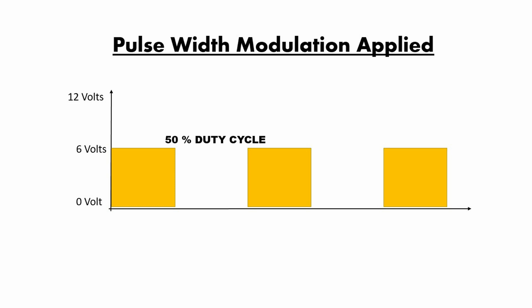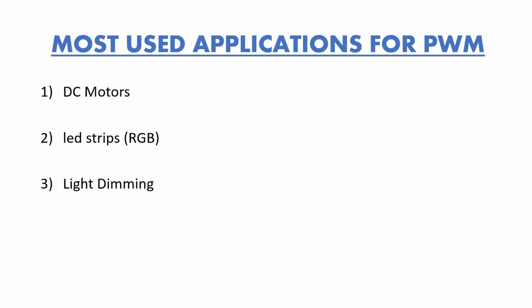Moving on to our fourth graph, we can see where pulse width modulation is mostly used. If we use 25% or 30% of our duty cycle, we use that amount of current flowing in our circuit. So we can precisely control what amount of current we are using — that is perfect for applications such as DC motors, LED strips that use RGB LEDs, and light dimming.